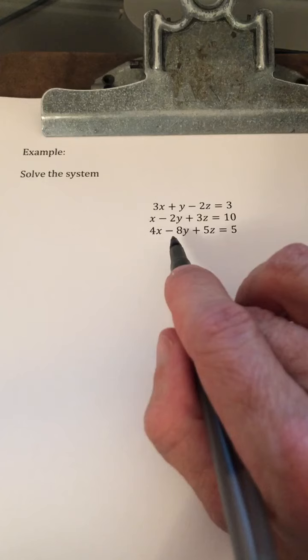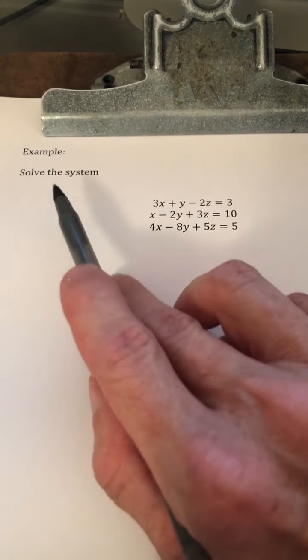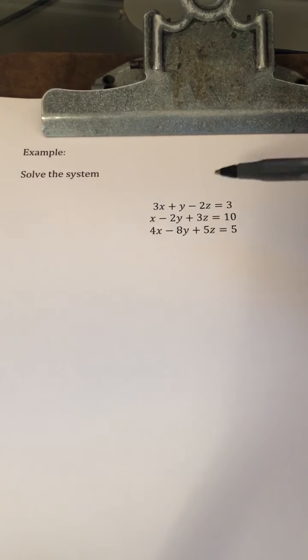4x minus 8y plus 5z equals 5. So what that means is we want to find an ordered triple x, y, z that satisfies all three equations, if possible. It's not always possible, but regardless, we will try.